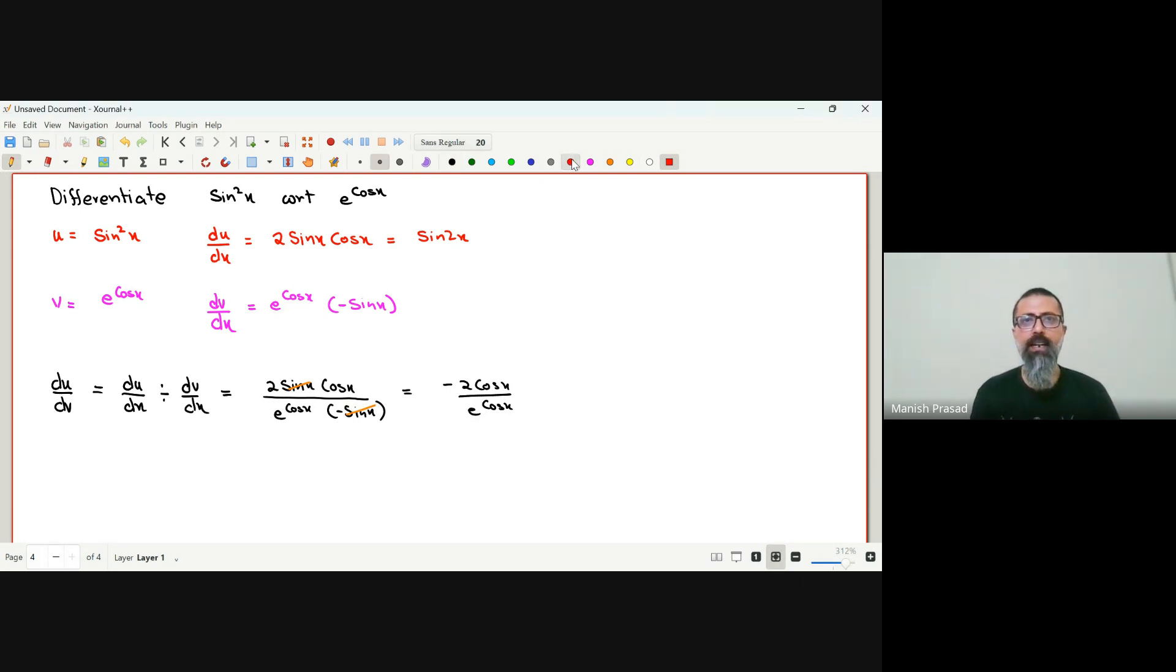फिर से मैं कर रहा हूँ, आपका du by dx is d by dx of sin square x. अब सबसे पहले, सबसे पहले आप square पे लगाओगे. तो जब square पे लगाओगे, तो आपका क्या हो जाएगा? 2 sin x. ये clear है? ये step clear है?